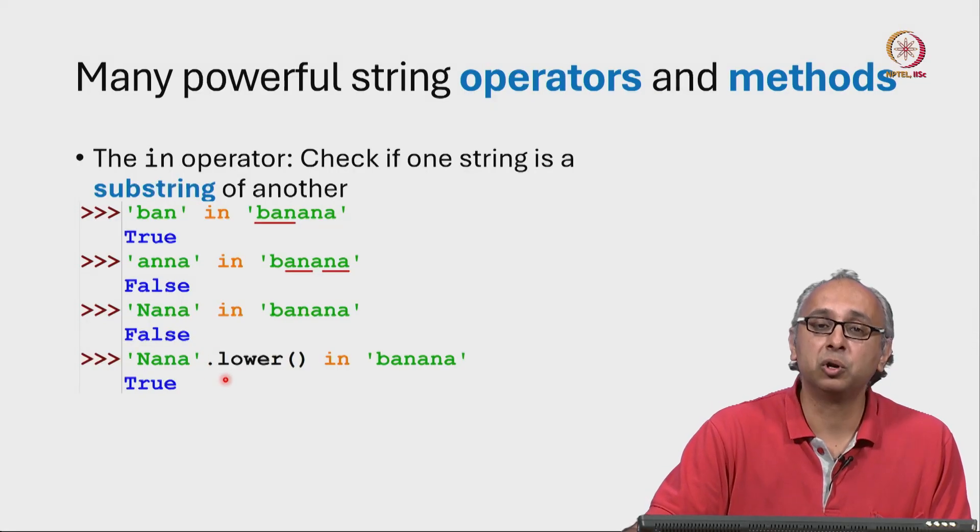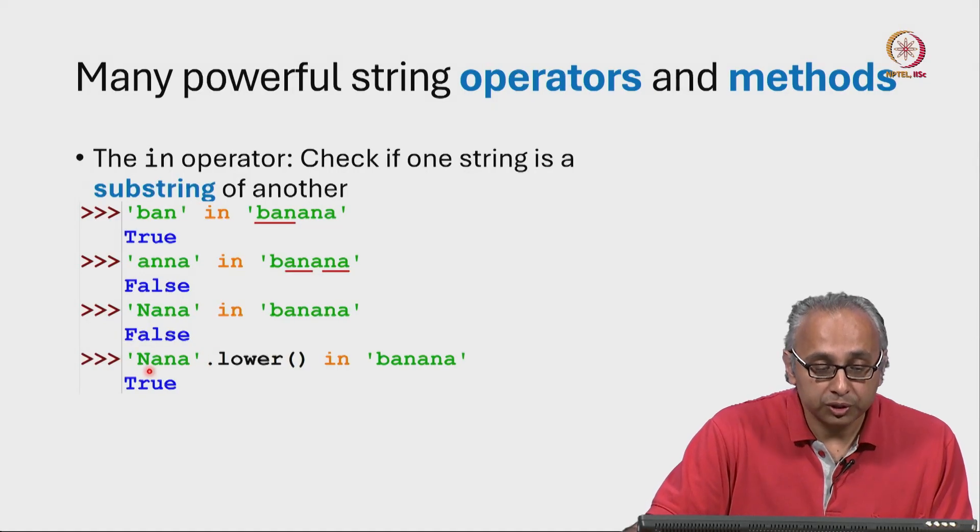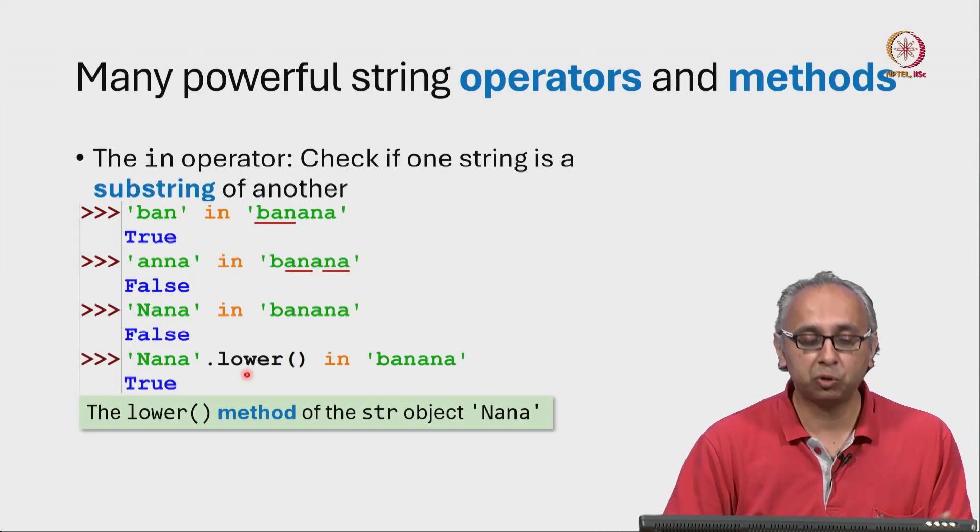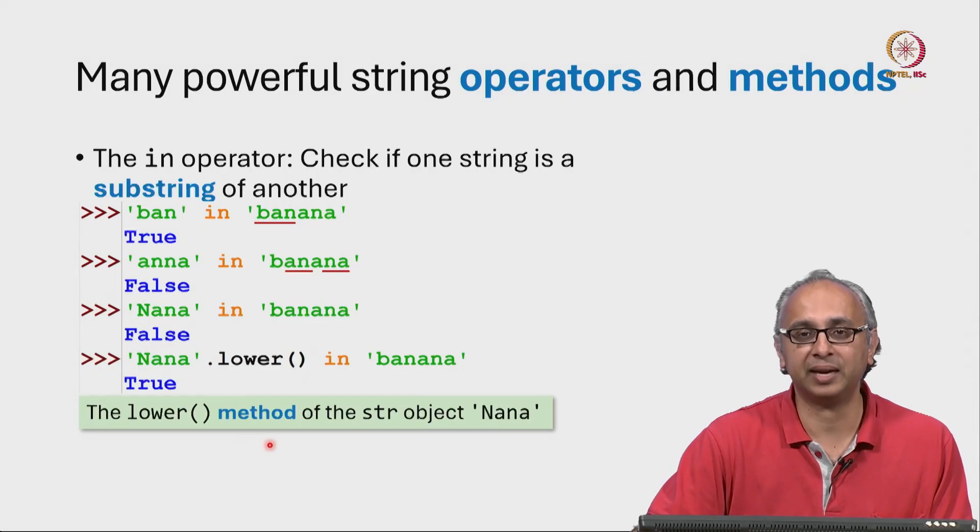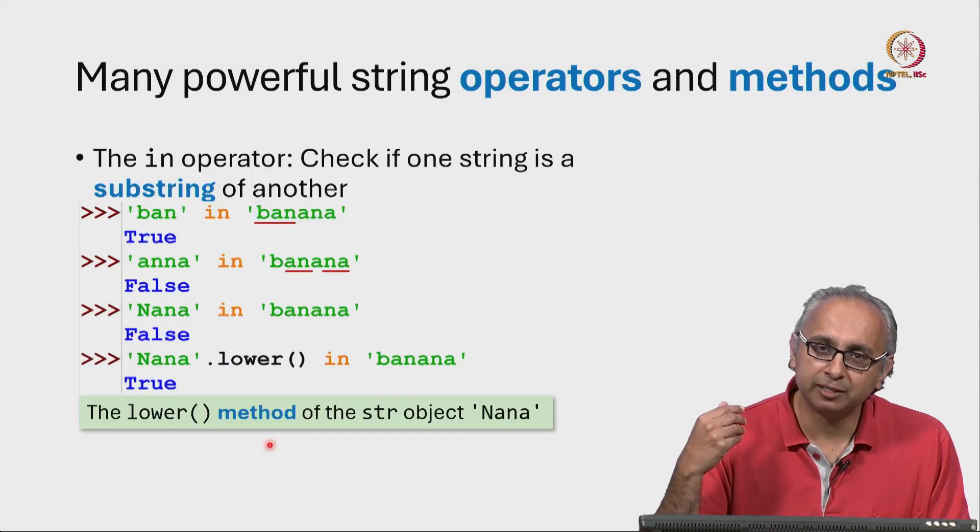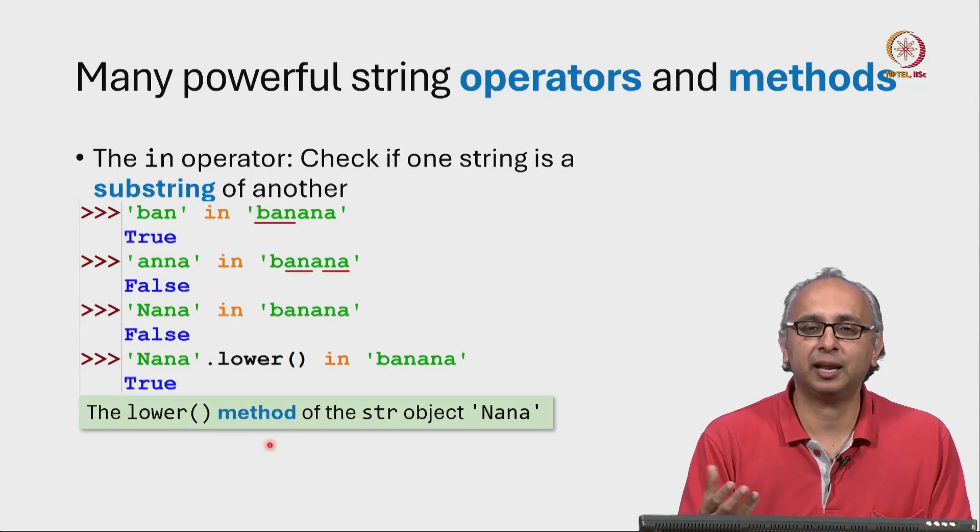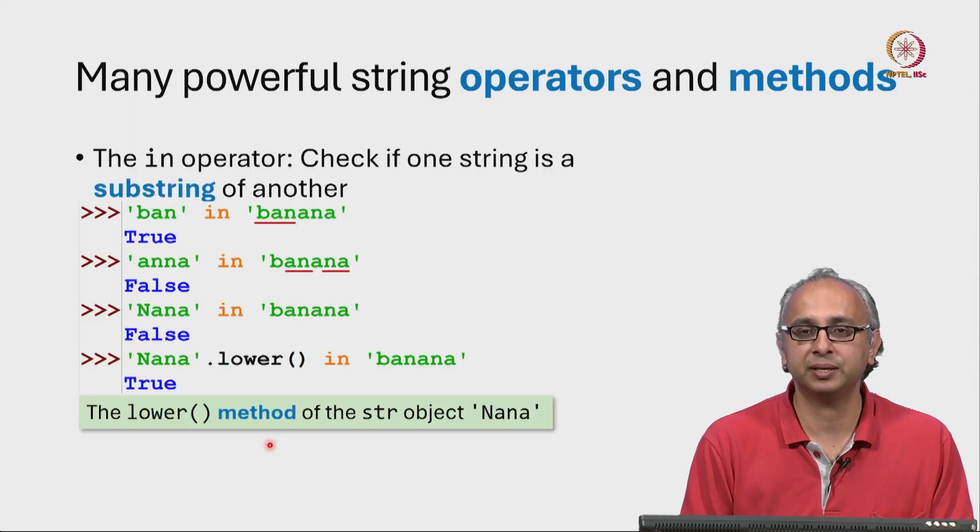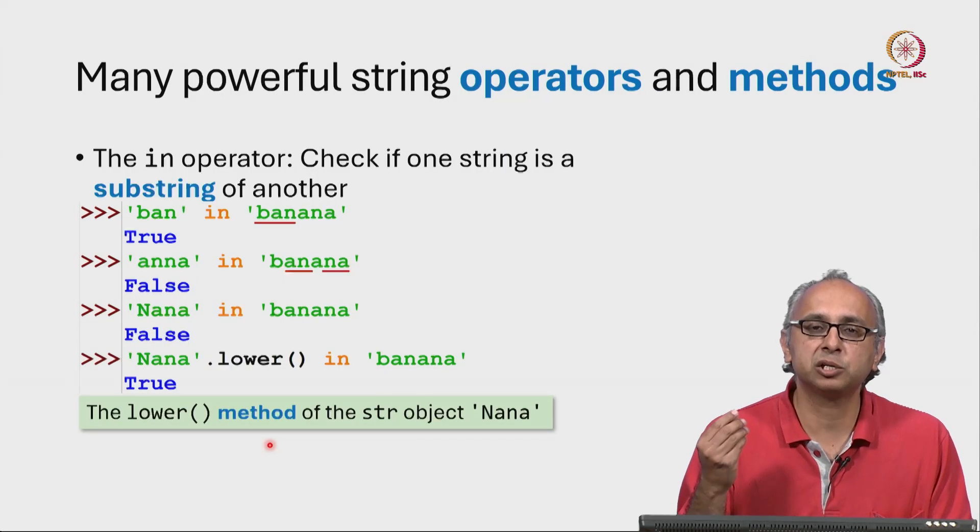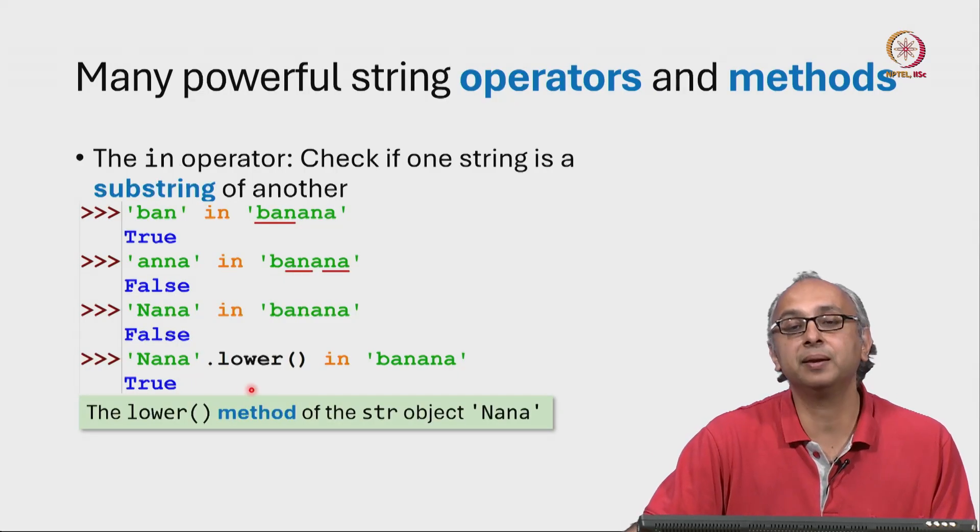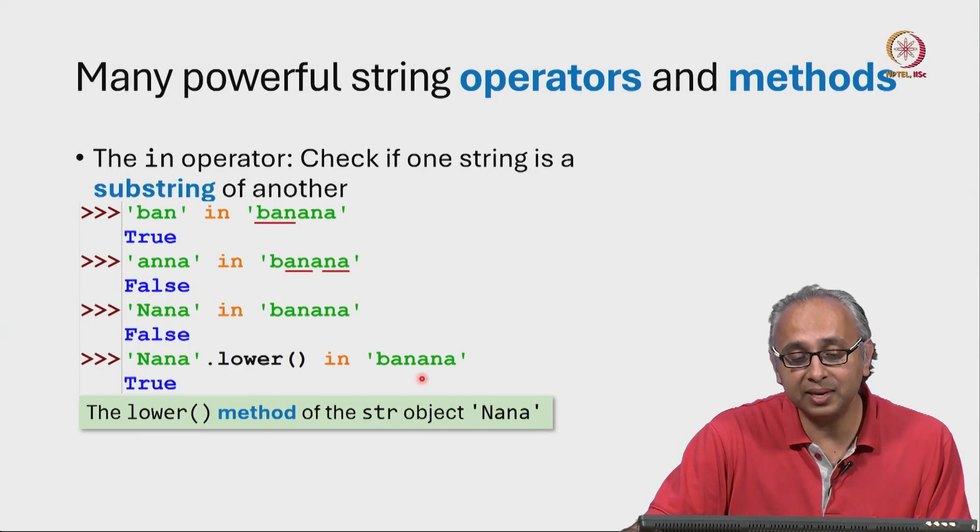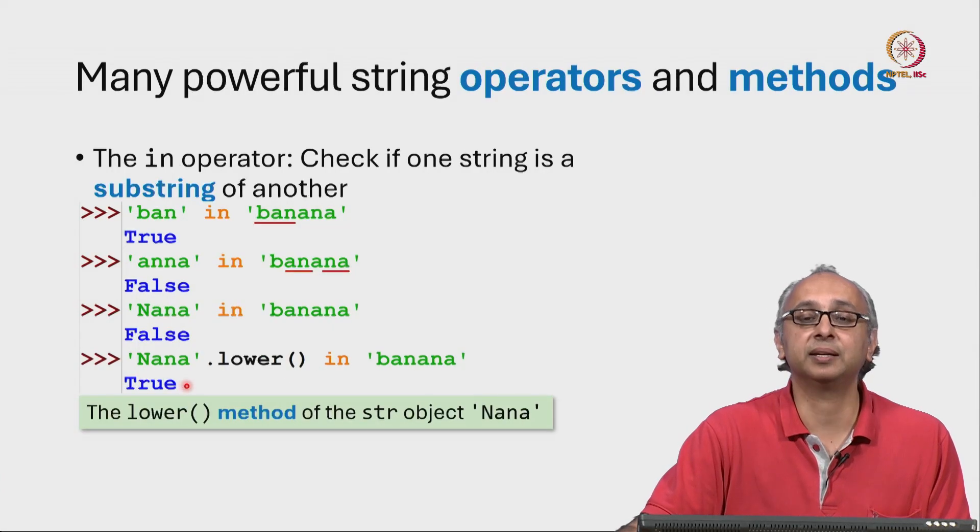Now there is a method called lower. So 'Nana'.lower() is taking the string object Nana and calling the lower method on that string object. Now what exactly this is, we will defer to later but think of it roughly like calling the lower function on the object Nana. It is not quite this but for now, let's keep that mental shortcut in mind. So if I take Nana and then convert it to lower case, then this capital N will become a little n and then this is in banana so we will get the answer true.